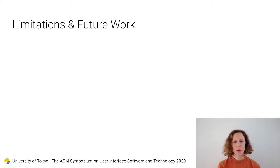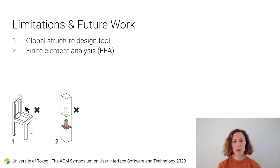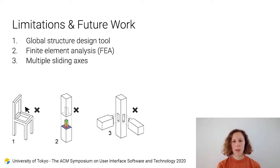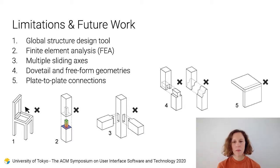As for limitations and future work, Tsugite focuses on the joint design only. In the future, it would be helpful to integrate the design of a whole structure. We also leave it to future work to extend Tsugite with more thorough structural analysis, such as FEA, without compromising too much on calculation times. Furthermore, it is not possible to create three or more timber joints that have multiple sliding axes. And due to the voxelized design space, it is not possible to make shapes like a dovetail or freeform curve. Finally, the system is made for frame structures and does not fully extend to plate-to-plate connections.